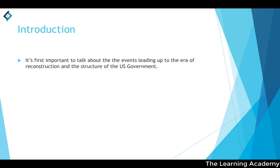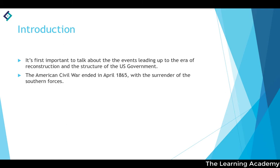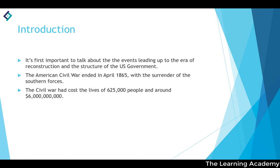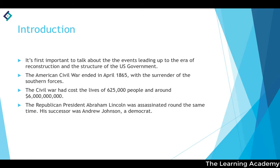As an introduction, it's important to talk about the events leading up to the era of Reconstruction and the structure of the US government, because understanding those things helps us understand Reconstruction and the Gilded Age. The American Civil War ended in April 1865 with the surrender of the Southern Forces, the Confederacy. The Civil War cost the lives of nearly a million people — around 625,000 — at a cost of around 6 billion dollars, making it the most costly war in terms of lives America has ever been part of.